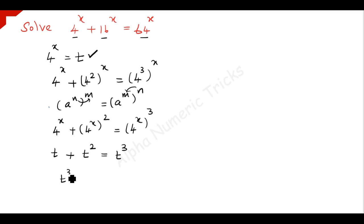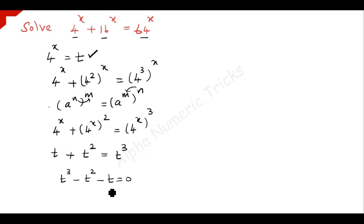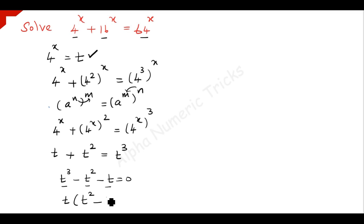Taking all terms to one side, you have t cubed minus t squared minus t equals 0. We move the positive terms to the other side, making them negative. Now t is common, so factor it out: t times (t squared minus t minus 1) equals 0.